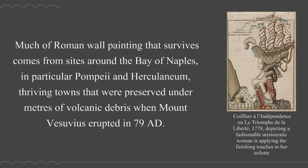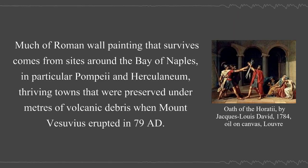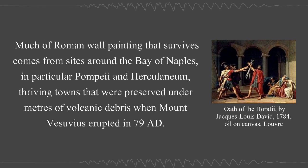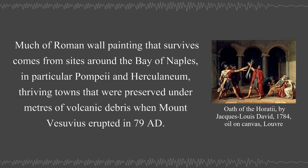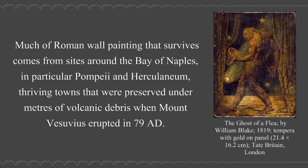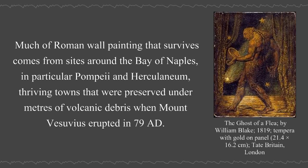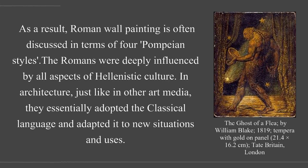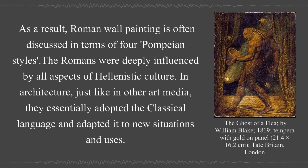Some villas of wealthy Romans had their walls covered with frescoes aimed at dazzling and entertaining guests. Much of Roman wall painting that survives comes from sites around the Bay of Naples, in particular Pompeii and Herculaneum, thriving towns preserved under meters of volcanic debris when Mount Vesuvius erupted in 79 AD. As a result, Roman wall painting is often discussed in terms of four Pompeian styles.